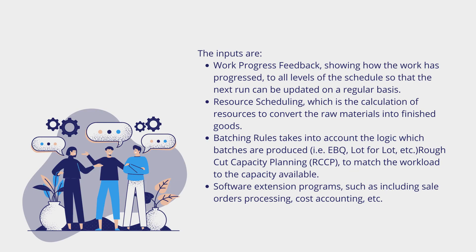In addition to the MRP-1 tools, MRP-2 calculates and solves the planning of the manufacturing resources of the organization, including: ability to simulate production processes, optimized calculation of routes and work centers, and study of demand and the market. The inputs include work progress feedback showing how the work has progressed to all levels of the schedule so that the next run can be updated on a regular basis; resource scheduling, which is the calculation of resources to convert raw materials into finished goods; batching rules that take into account the logic by which batches are produced (e.g., EBQ, lot for lot, etc.); rough cut capacity planning (RCCP) to match the workload to the capacity available; and software extension programs such as sales order processing, cost accounting, etc.